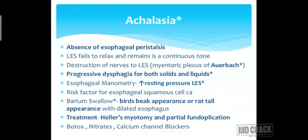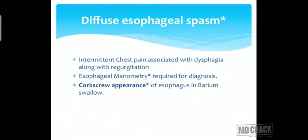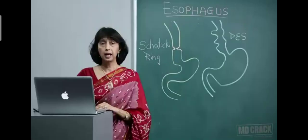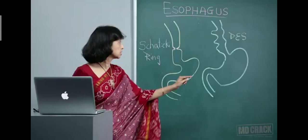Diffuse esophageal spasm presents with intermittent chest pain associated with dysphagia and often regurgitation. Manometry shows fluctuation — increase and decrease — in esophageal pressure. On barium swallow, there is a characteristic corkscrew appearance of the esophagus. This is important for MCQs.